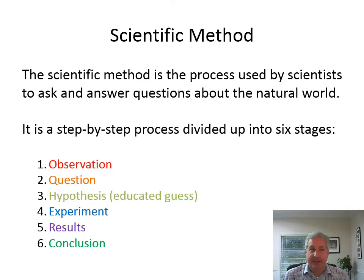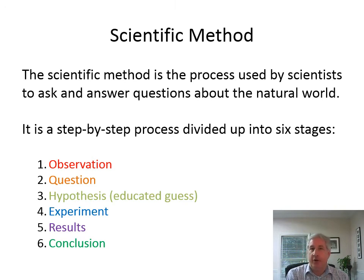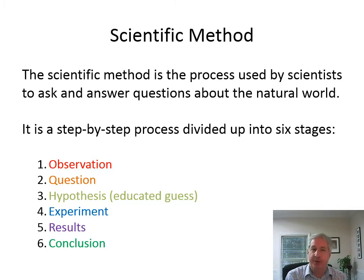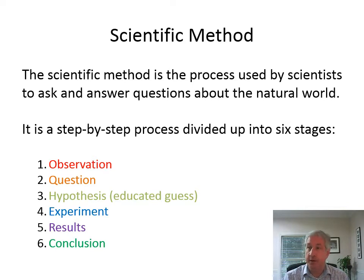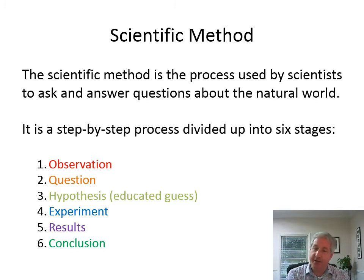So the scientific method: what is it? It's a series of steps or a process that all scientists use to ask and answer questions about the natural world. Truly, when you're doing science in the lab, you don't lay out each of these steps every single time. You just do the work and create hypotheses as you go along, but this is a really good description of how the scientific process works.